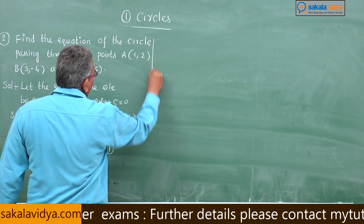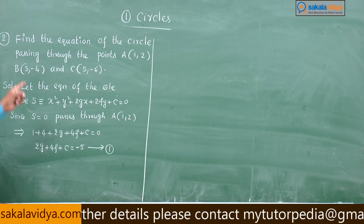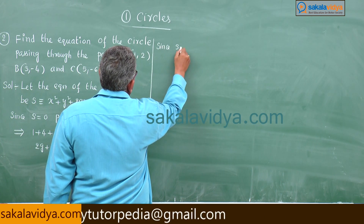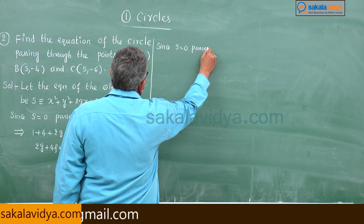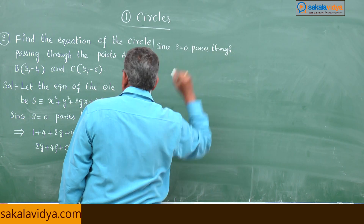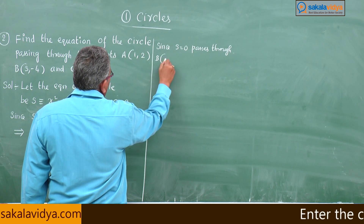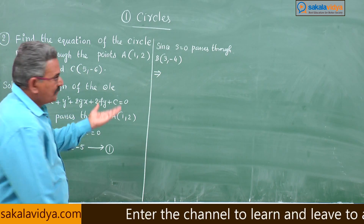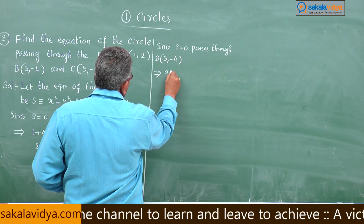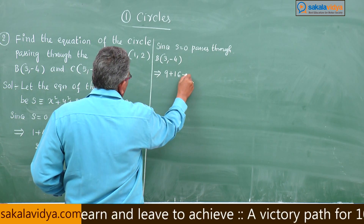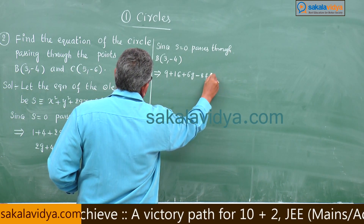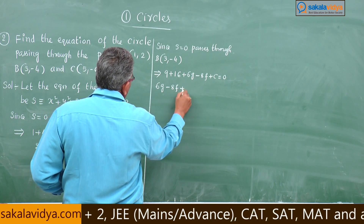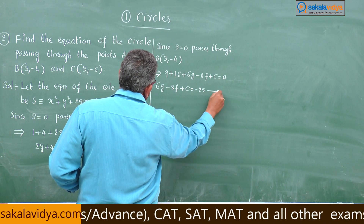Now let us come to the next point, which is B(3, −4). Since S = 0 passes through B(3, −4), substituting: 9 + 16 + 6g − 8f + c = 0, so 6g − 8f + c = −25. Say equation 2.